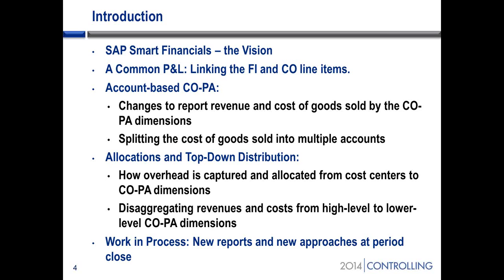Now we're bringing those together so that they can basically be reported on as if they're one line item. The same on the CO side of the house — when it's a revenue item or a cost of goods sold item, it's coming in onto a profit and loss account, getting tied to a primary cost element in account-based COPA, and then joining in the COPA dimensions for reporting.